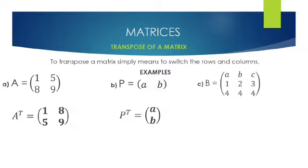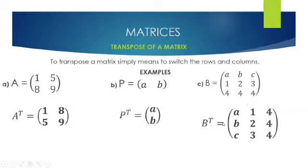In example C, we're given a three by three matrix B. If we are asked to find the transpose of B, we simply make our rows into columns, and we'll have the transpose of B equal to this matrix. As you can see, A, B, C, which was a row, becomes a column.